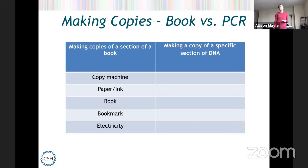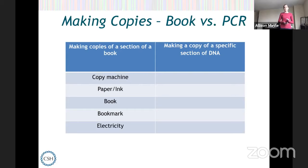You might think of other things you would need to copy a book, but let's work with this list and think about what the equivalent is in PCR. If you were trying to make copies of a specific section of DNA, even if you don't know much about PCR yet, you can think about what these might be. So what is the copy machine? This is going to be a molecular machine that makes copies of DNA.